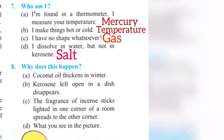Question number seven: Who am I? First: I am found in a thermometer. I measure your temperature. Answer: Mercury. Second: I make things hot or cold — that is temperature. I have no shape whatsoever. Answer: Gas. Third: I dissolve in water but not in kerosene. Answer: Salt.